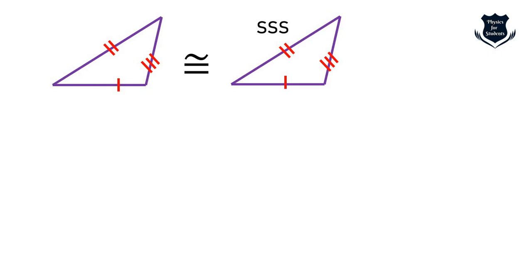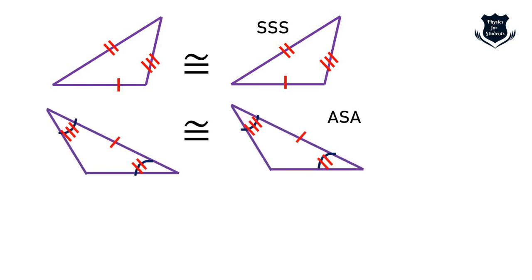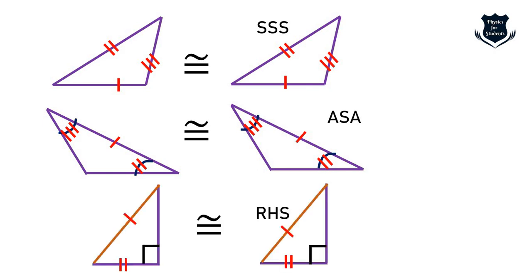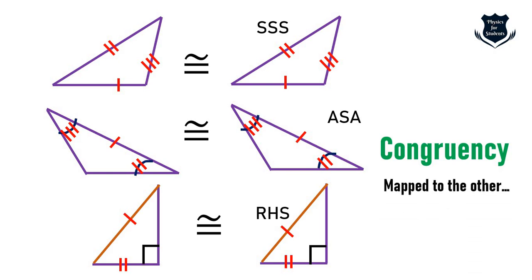In Euclidean geometry, we have the concept of congruence. Looking at these rudimentary triangle sketches from school days — side-side-side, angle-side-angle, RHS — these are all examples of congruency. Two shapes are congruent when one can be mapped to the other. The simple sketches of triangles on the right hand side show how they are congruent to each other.